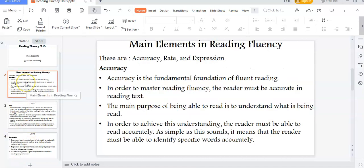So those are the three main elements of reading fluency: accuracy, rate, and expression. That marks the end of this presentation on reading fluency skills.